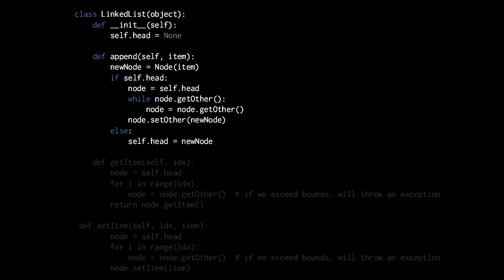On the other hand, if self.head is not equal to none — if there already is a head — then what we need to do is find the tail node. We do so by following the chain of references from the head node to the last node in our list, which is the node where the reference is equal to none. We can do this by assigning self.head to a variable node, and then looping with the condition of node.getOther.